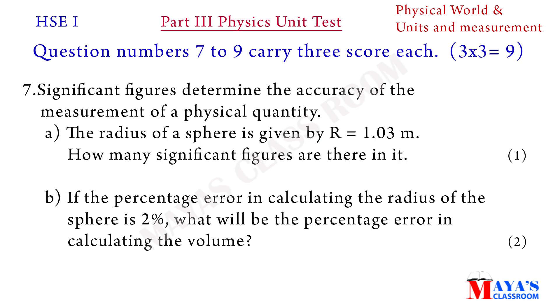Next section, question number seven to nine carry three score each. Seventh question: significant figures determine the accuracy of the measurement of a physical quantity. A, the radius of a sphere is given by R equals 1.03 meter. How many significant figures are there in it? B part, if the percentage error in calculating the radius of this sphere is two percent, what will be the percentage error in calculating the volume?